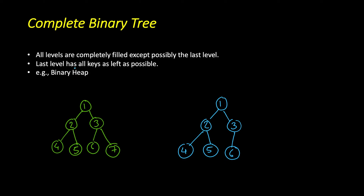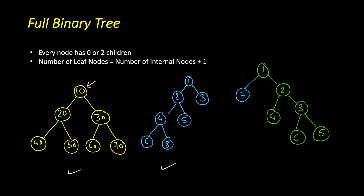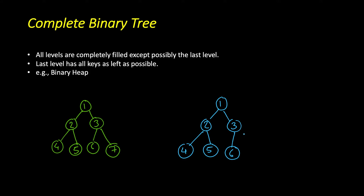Complete binary tree is similar in some sense but also different from full binary tree. All levels are completely filled except possibly the last level. The earlier example qualifies as a complete binary tree because all levels are completely filled and even the last level is completely filled. But the second example is not a complete binary tree because we have four levels — levels one and two are complete, but level three is not complete and it's also not the last level. Only the last level is allowed to be incomplete.